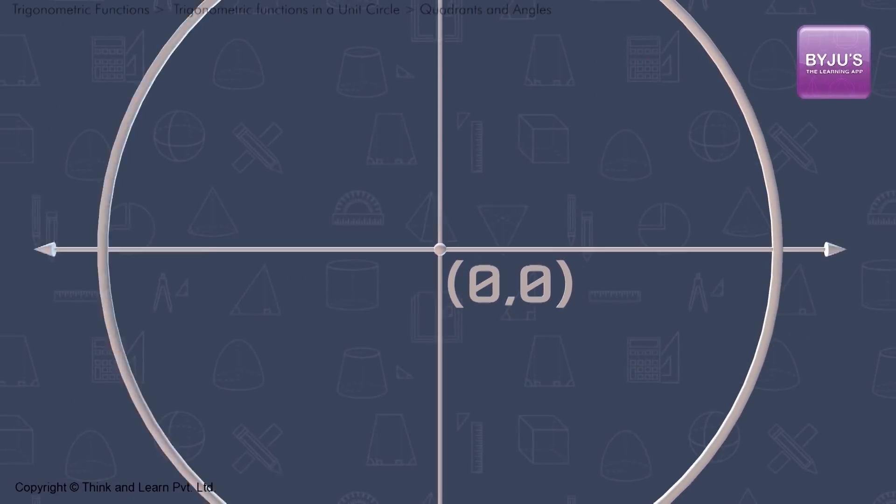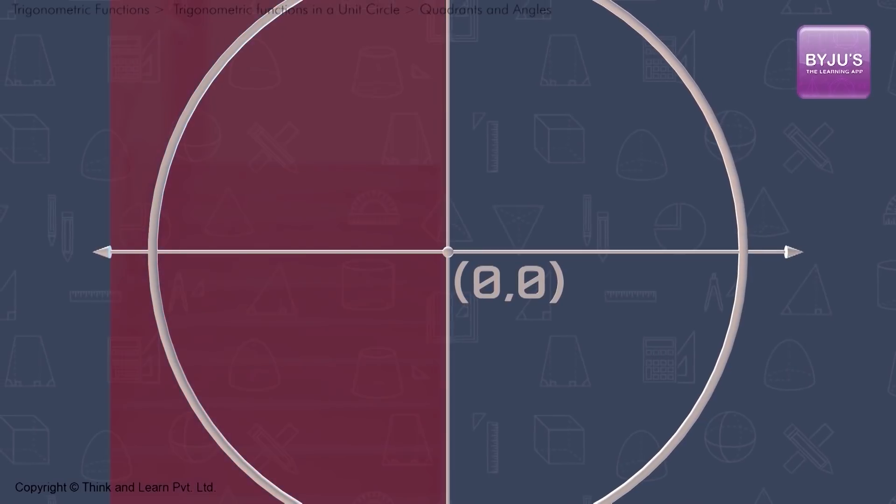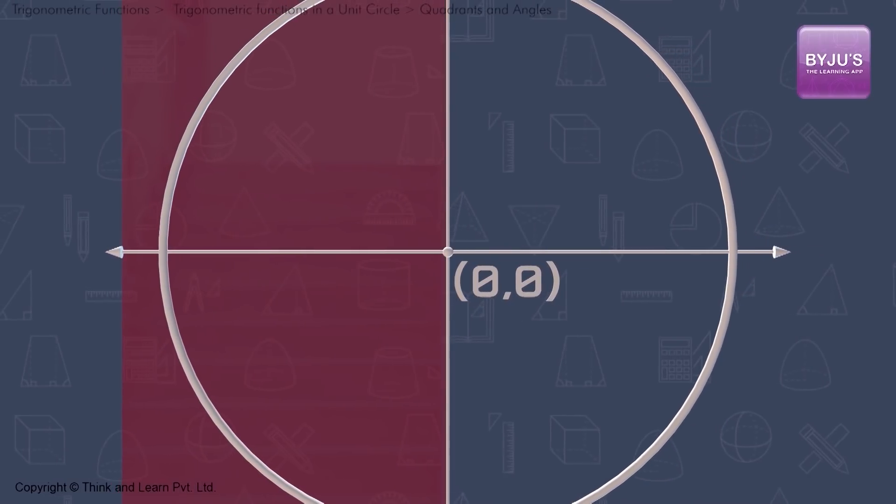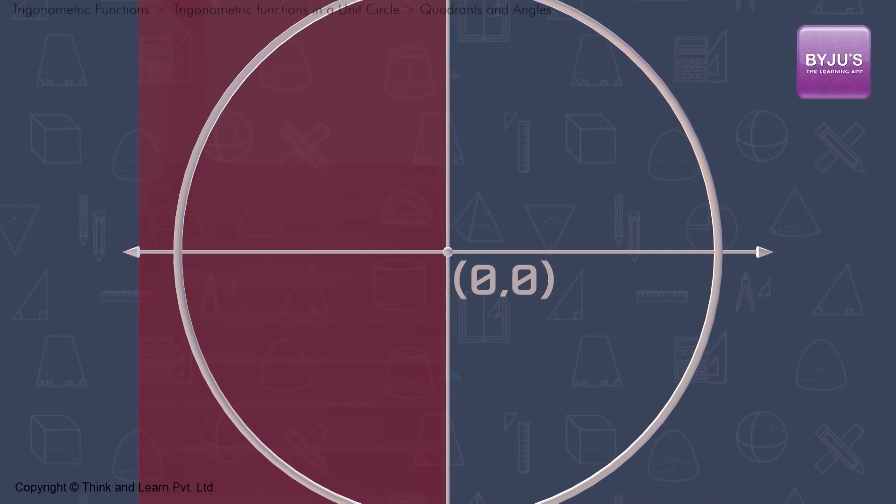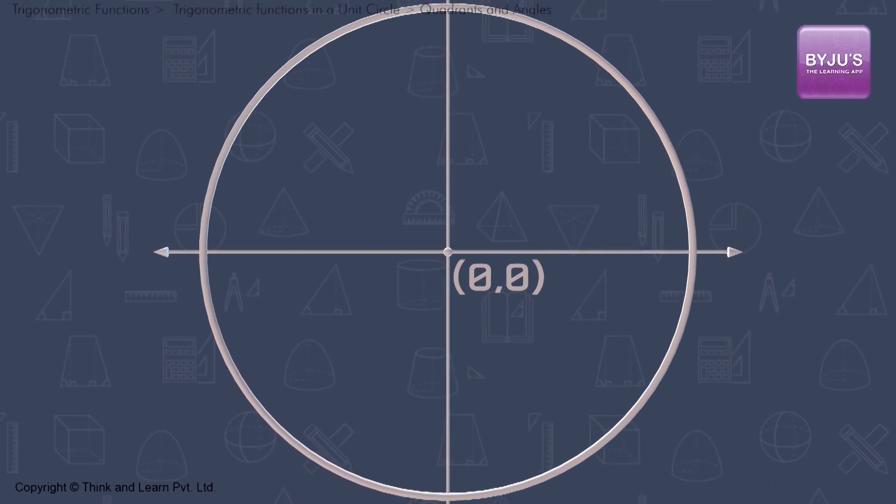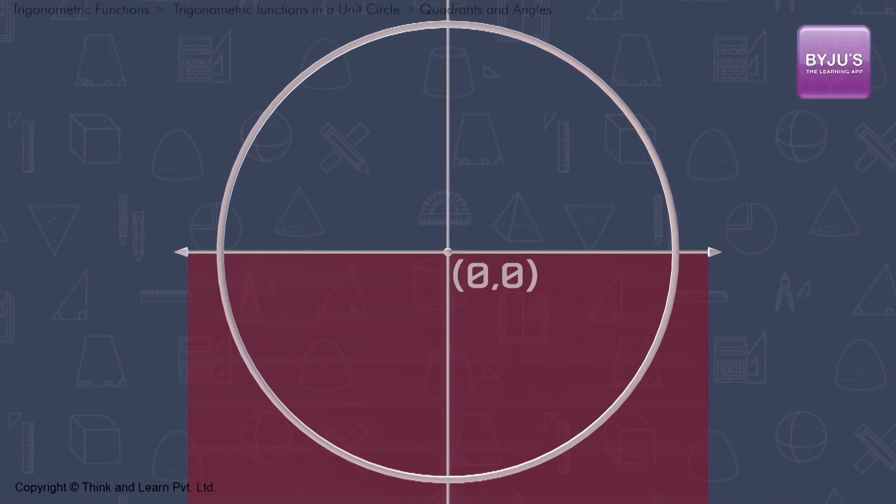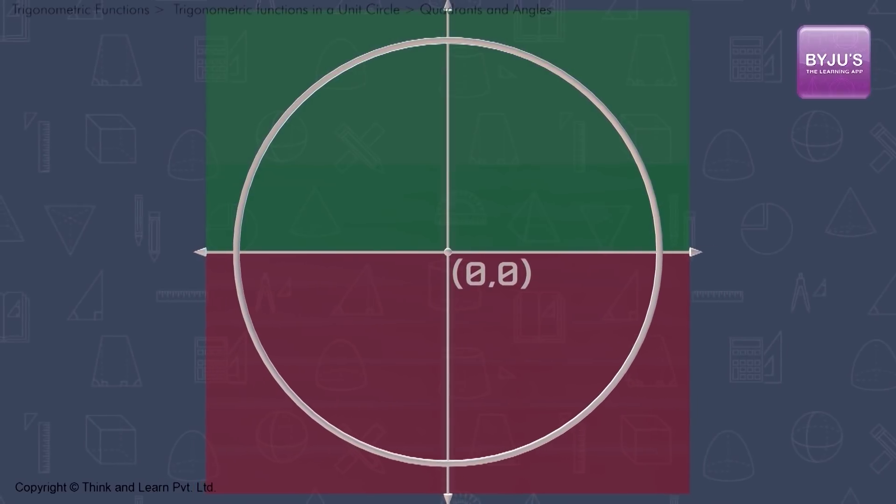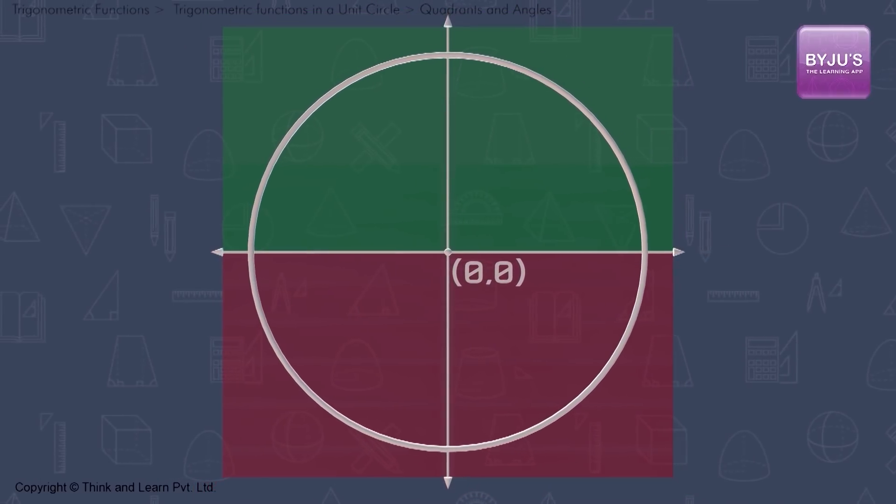Anything to the left of the center has an x value less than 0 or a negative x value. Anything to the right of the center has a positive x value. Similarly, anything below the center has a negative y value and anything above the center has a positive y value.